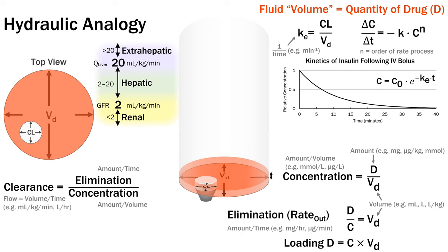For example, this function shows the concentration of insulin after an IV bolus, which follows a one-compartment model. The equation is based on the differential above it, with C0 representing the starting concentration. We can also use k to determine the half-life — for insulin, ke is about 0.1 per minute. The natural log of 2 is around 0.69, so the half-life of IV insulin is therefore between 6 and 7 minutes. The inverse of k is also known as the time constant — it's just another way of describing the same thing.